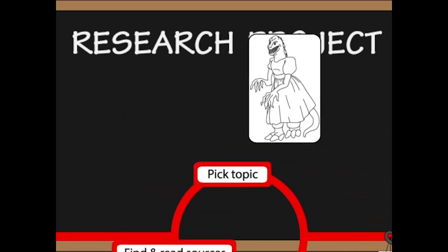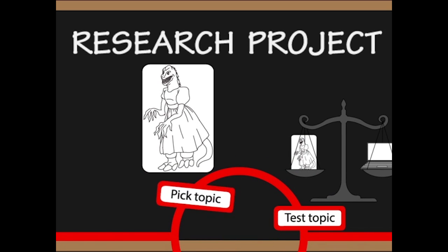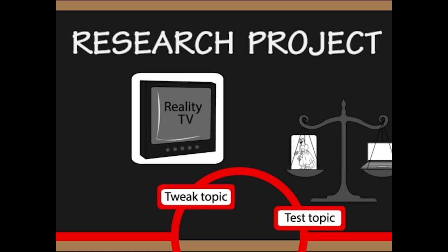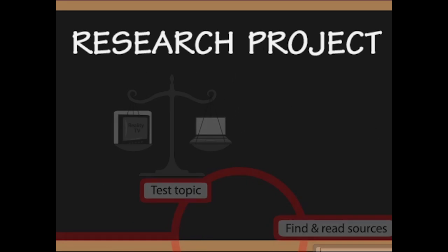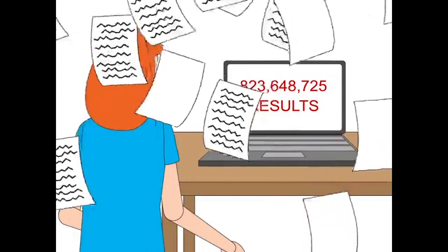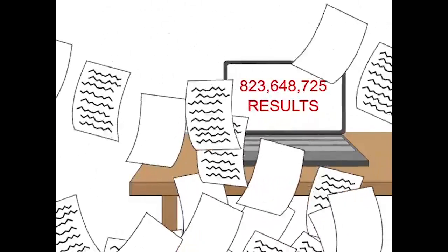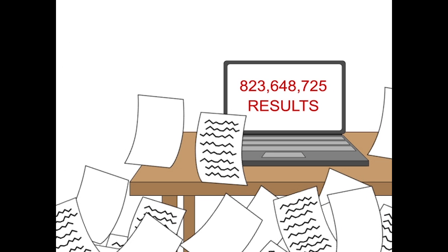Realizing that maybe her topic is a bit too narrowly defined, Jenny decides to tweak it, by broadening her scope to reality TV in general. But when she tests this new topic, she winds up drowning in a sea of research, all of which has to do with reality TV, but doesn't tie together to help her form a coherent thesis.